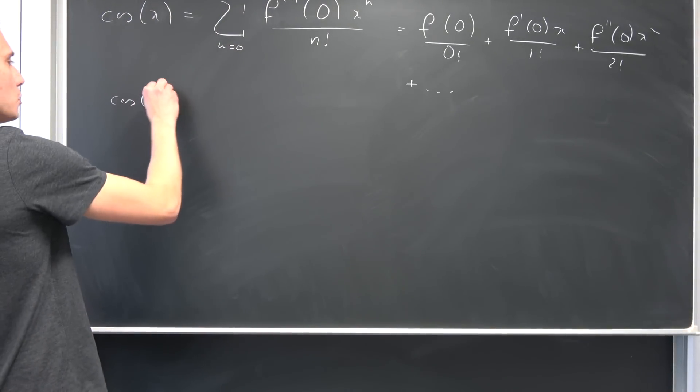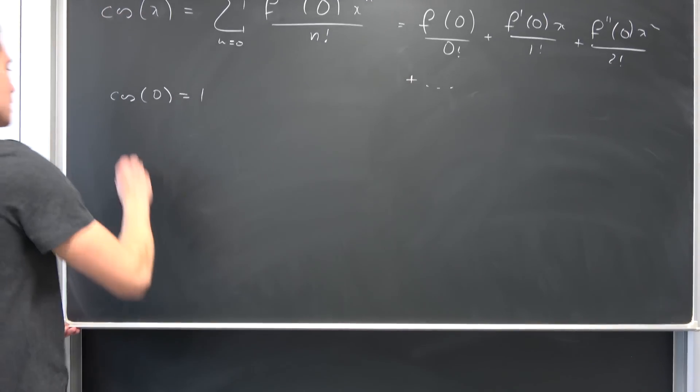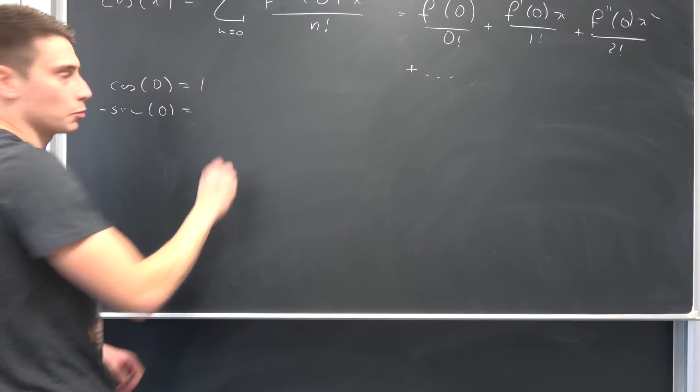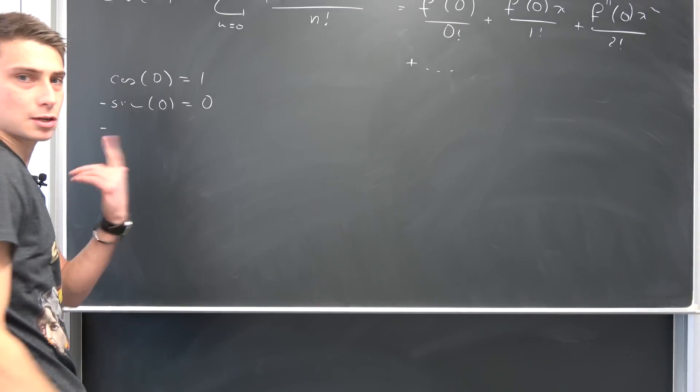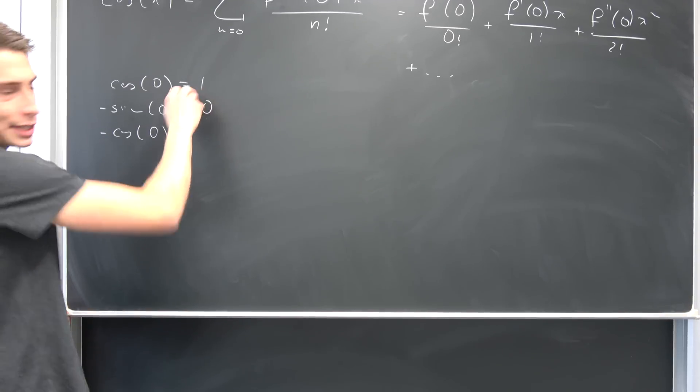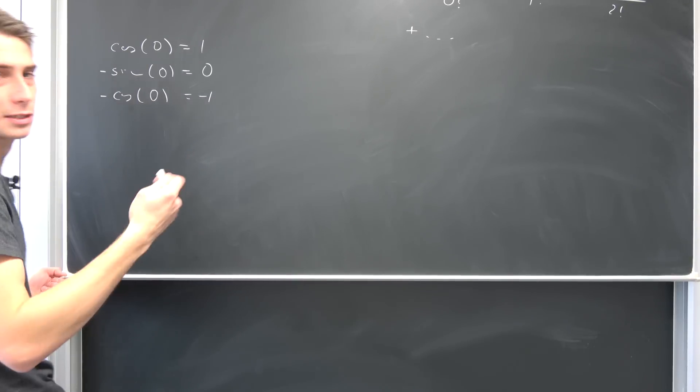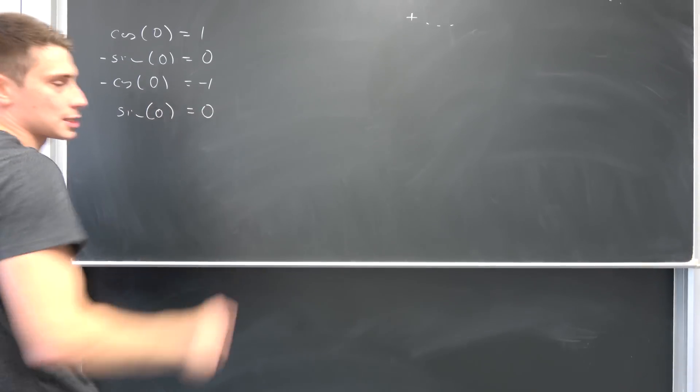So the cosine of zero is nothing but 1. So this is the first part. Differentiating the cosine leaves us with negative sine evaluated at zero which is just zero. Next up, sine differentiated is cosine so this is going to give us negative cosine of zero. Well this is nothing but negative one. And cosine differentiated is negative sine so this is sine of zero which is just zero.